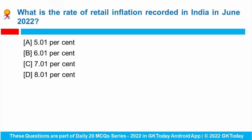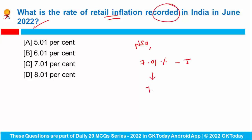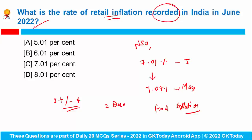What is the rate of retail inflation recorded in India in the month of June 2022? As per the recent data released by the National Statistics Office, retail inflation slowed down marginally to 7.01% in June from 7.04% in May 2022, due to moderation in food inflation. The inflation rate continued to remain above the 7% mark for the third month in a row, and it is higher than the RBI's target of 2 plus or minus 4% for the medium term for two quarters. The correct answer is 7.01%.